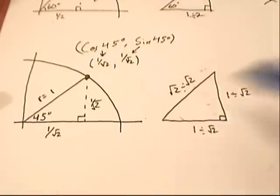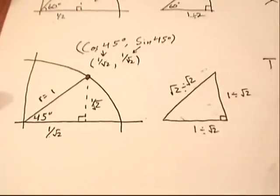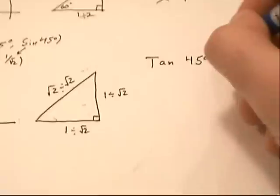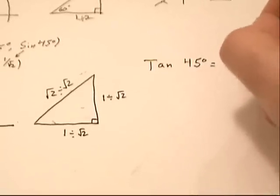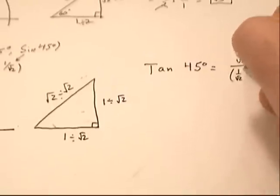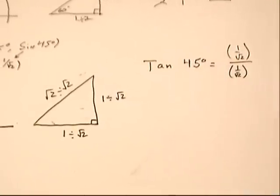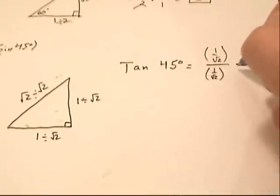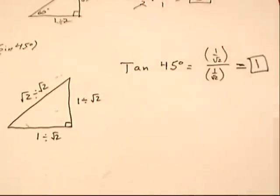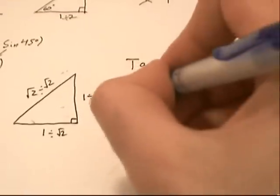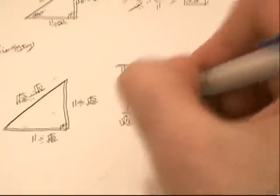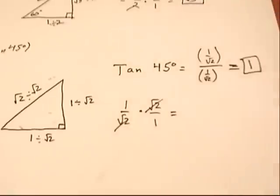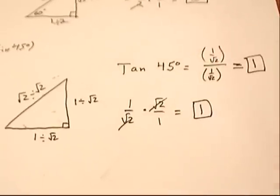And to find tangent, we have to do opposite over adjacent. So tangent of 45 degrees is equal to (1/√2) over (1/√2), and we should recognize that whenever we divide something by the exact same thing, we end up with exactly 1. If you don't believe that, you can still go through and take 1/√2, multiply it by its reciprocal √2/1, and they cancel out and you get exactly 1. Thank you.